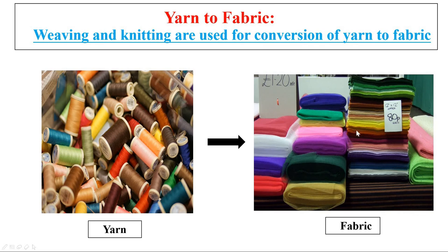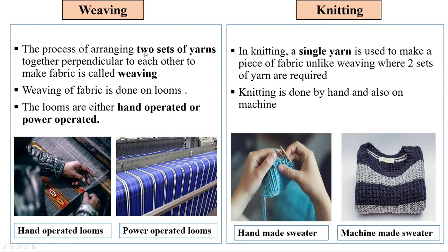Now let's see how yarns are converted into fabric. Weaving and knitting are used for the conversion of yarn to fabric. The process of arranging two sets of yarns together perpendicular to each other to make fabric is called weaving. Weaving of fabric is done on looms, which are either hand-operated or power-operated. In knitting, a single yarn is used to make a piece of fabric, unlike weaving where two sets of yarns are required. Knitting is done by hand and also on machines.